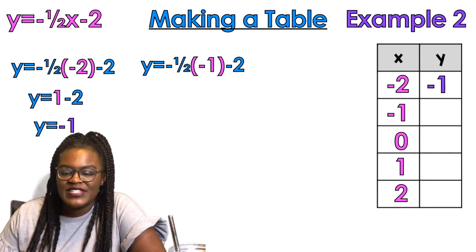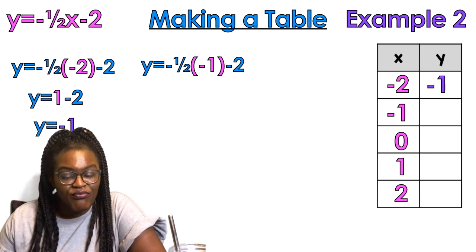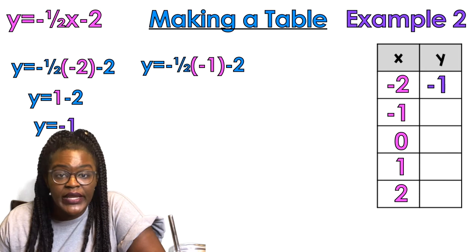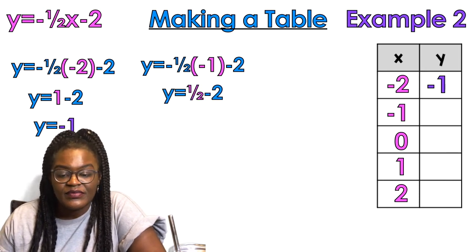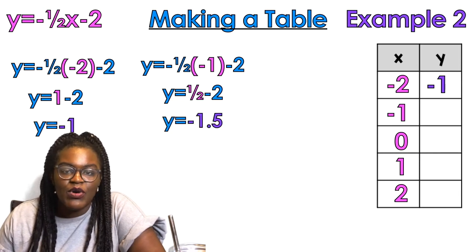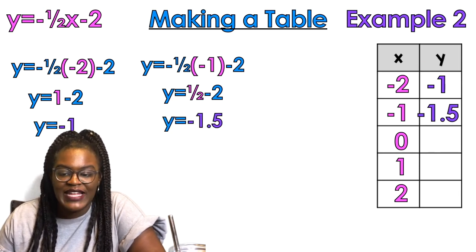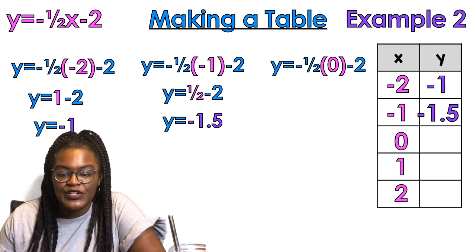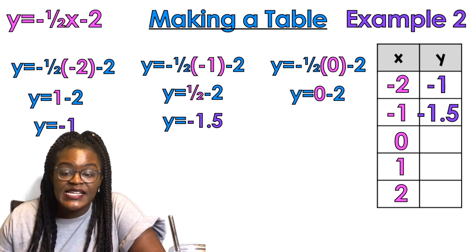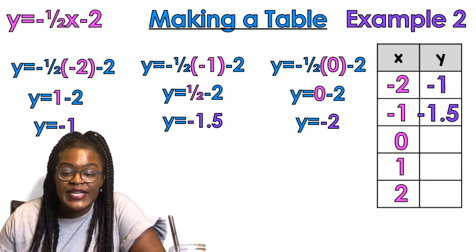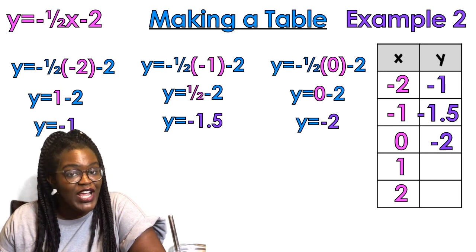Now I'm plugging in negative one. What's half of one? 0.5 — negative times negative is positive — so half minus two equals negative 1.5. We'll put that in the table. Now we're doing one half times zero — anything times zero is zero — zero minus two is negative two. That goes in the table.